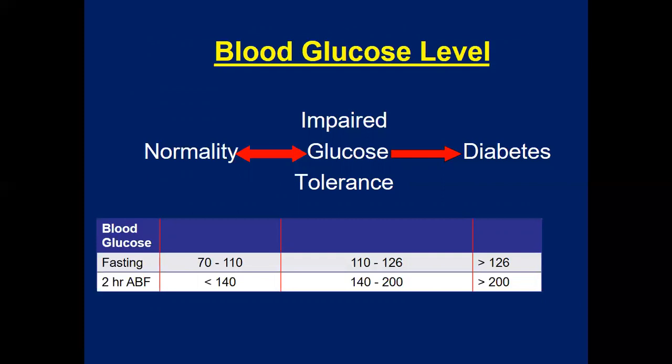A two-hour post-glucose level between 140 and 200 is also considered pre-diabetic or impaired glucose tolerance, and this must be confirmed by repeat testing. If fasting glucose is more than 126 or the two-hour level is more than 200, the patient is clearly diabetic and no further testing is needed, though some criteria require confirmation on two occasions.